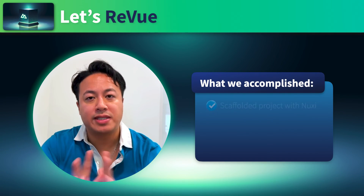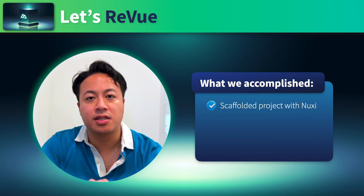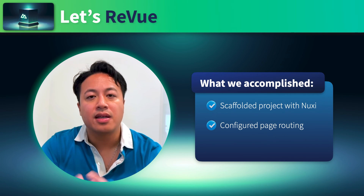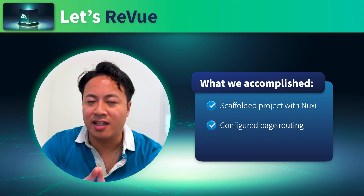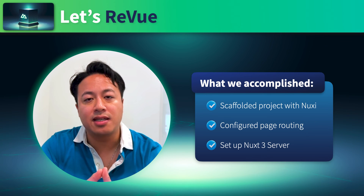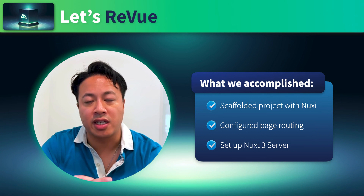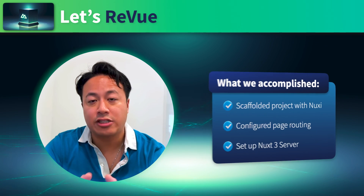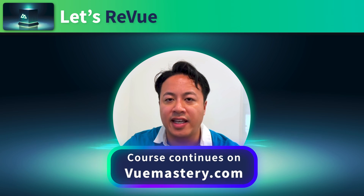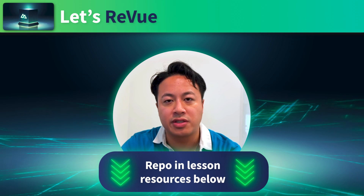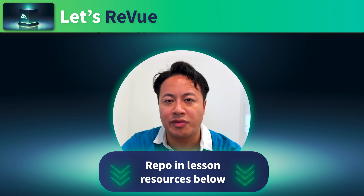Let's review what we did this lesson. We scaffolded a brand new project using the new Nuxt CLI tool NuxtC, configured page routing to ensure we had routing inside our app, and then did the not-so-complicated part of setting up a Nuxt 3 server - which is just making sure you have a server directory in the root directory of your application. As a reminder, if you're ever lost or need to see the starting or ending code of a lesson, check out the course resources to find the appropriate branch.